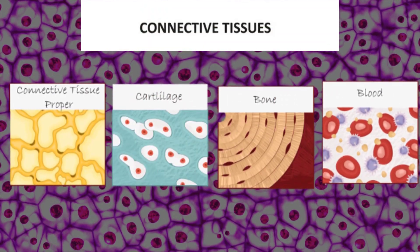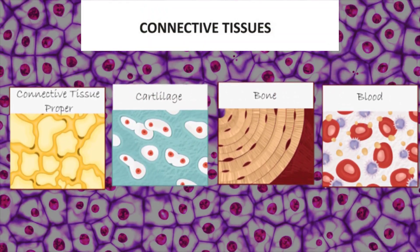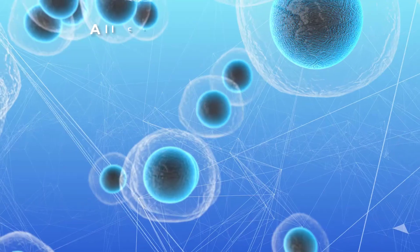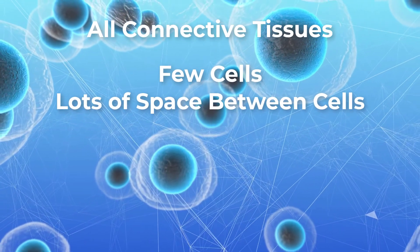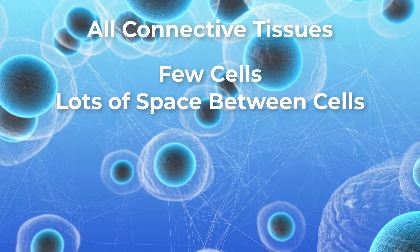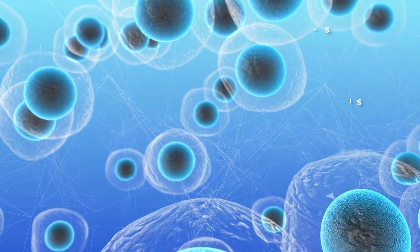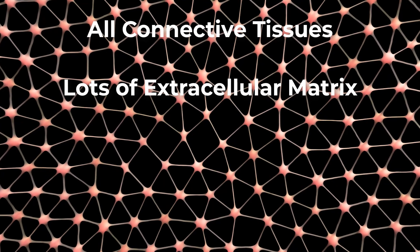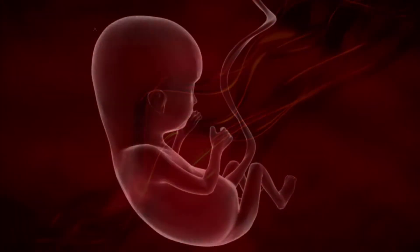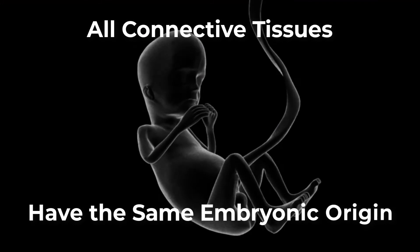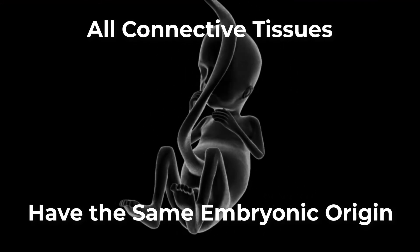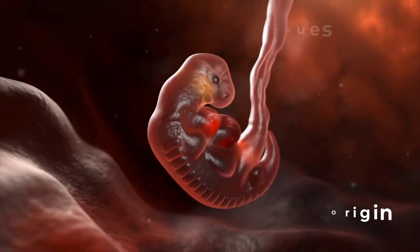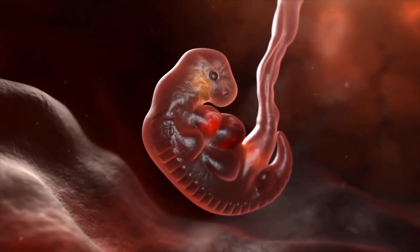There are three characteristics that are shared by all of the different types of connective tissue. All connective tissue contains relatively few cells with large amounts of space between them. All connective tissue contains a large amount of extracellular matrix — extracellular matrix is ground substance and protein fibers together. All connective tissues have the same embryonic origin, which is the mesenchyme. Mesenchyme comes from the mesoderm germ layer of the embryo.